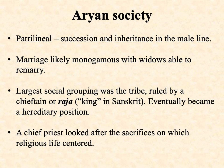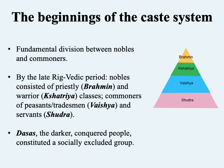Looking at the Vedic texts collectively, we get a pretty good idea about this new Aryan society taking shape. It was patrilineal, with succession and inheritance running through the male line. Marriage was likely monogamous, with widows able to remarry — a fairly progressive thing for that time period. The largest social grouping was the tribe ruled by a chieftain or raja, a term that would come to signify king in Sanskrit, a position that would eventually become hereditary.